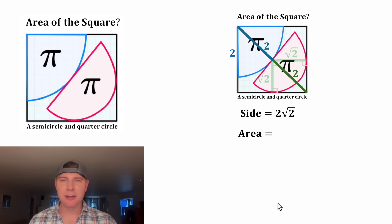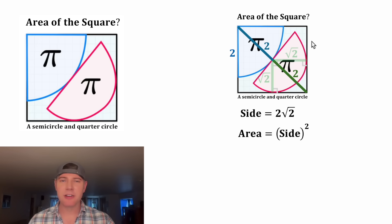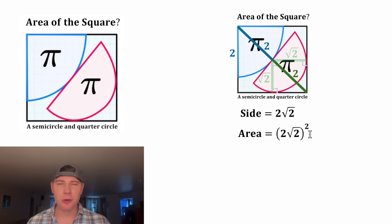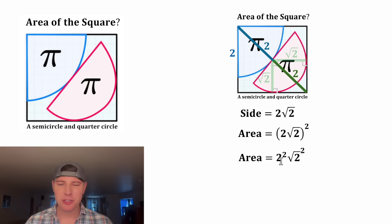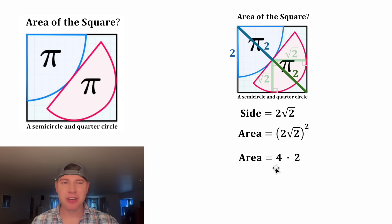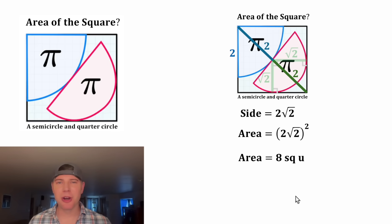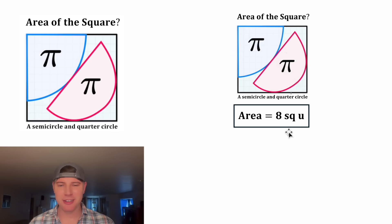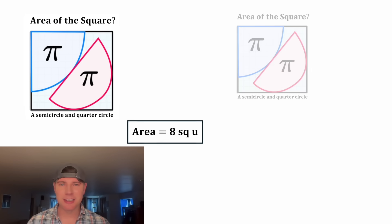Now we can figure out the area of the square. The area of a square is the side length squared, so the area will be two root two, quantity squared. Each factor can have its own square: two squared times square root of two squared. Two squared is four, and the square root and the square cancel each other out, leaving four times two, which equals eight. This is the answer to our question — the square has an area of eight square units. How exciting!